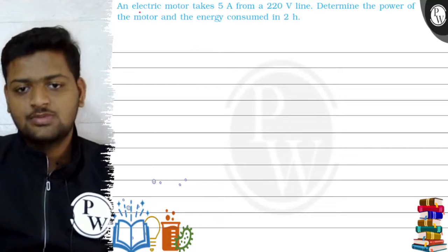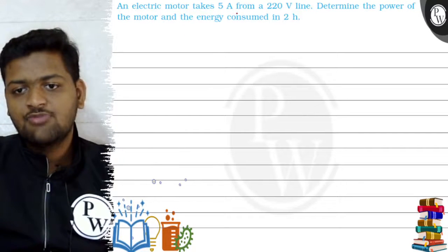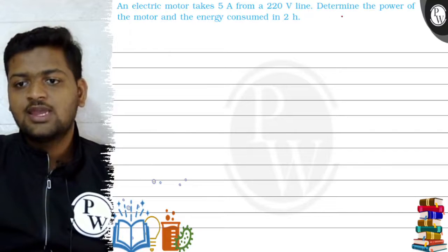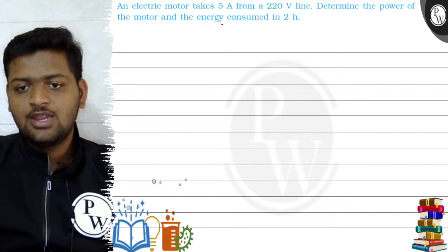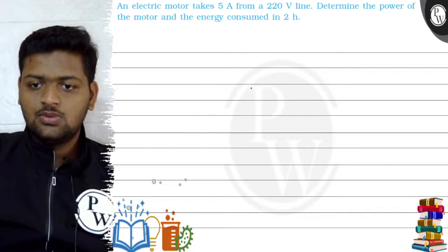Let's see this question: An electric motor takes 5 amperes from a 220 volt line. Determine the power of the motor and the energy consumed in 2 hours. So what we will do first...